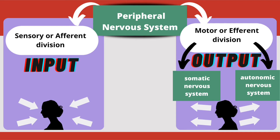The sensory or afferent division is responsible for input of information — taking information to the central nervous system — whereas the motor or efferent division is responsible for output of information, taking the response from the central nervous system to the affected organ.